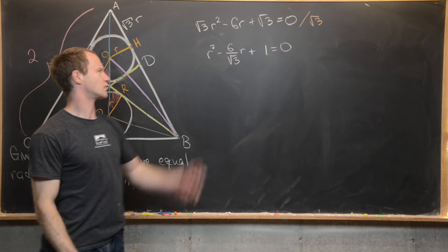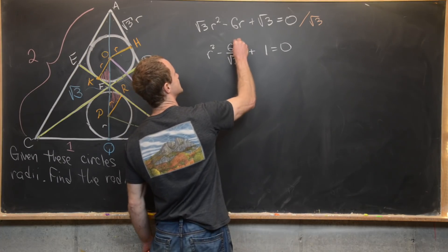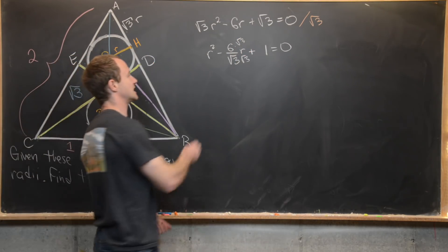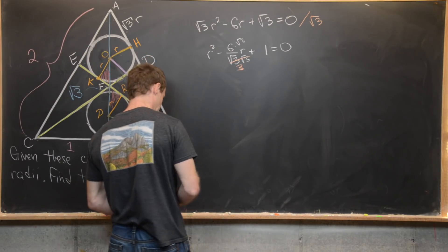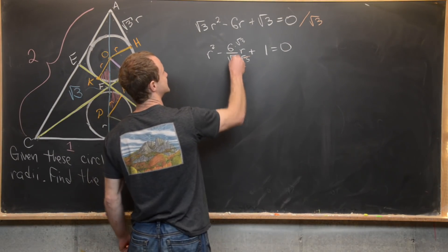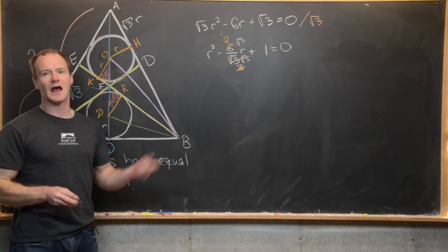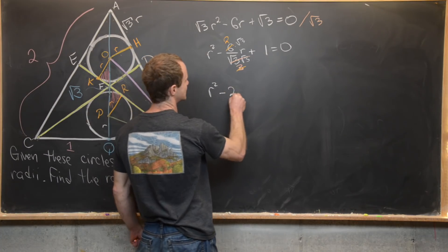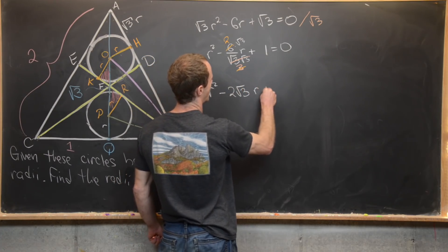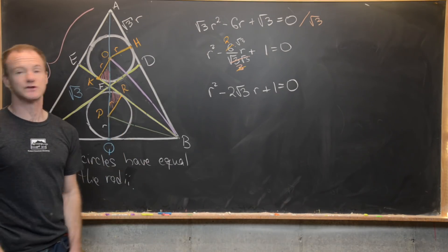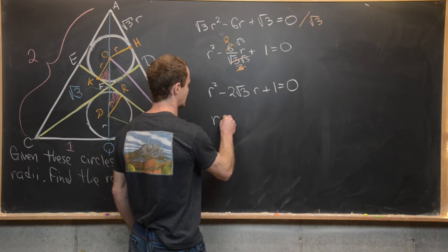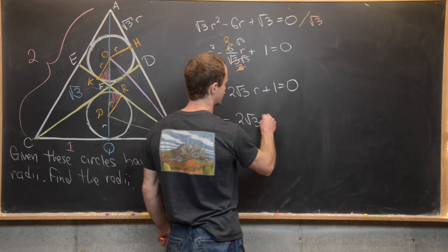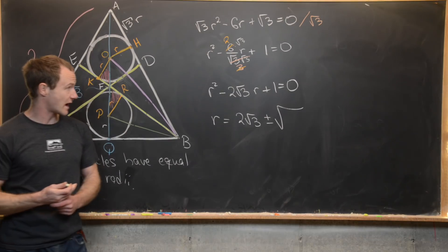We rationalize by multiplying the top and bottom by root 3, giving 3 in the denominator which cancels with the 6 in the numerator leaving 2. Now we have r squared minus 2 root 3 times r plus 1 equals 0. Using the quadratic formula: r equals (2 root 3 plus or minus square root of (4 times 3 minus 4)) all over 2, which simplifies to root 3 plus or minus square root of 2 after canceling the 2 in the denominator.